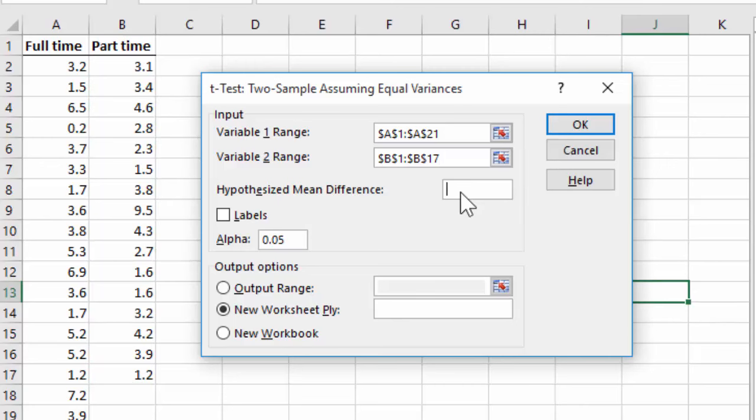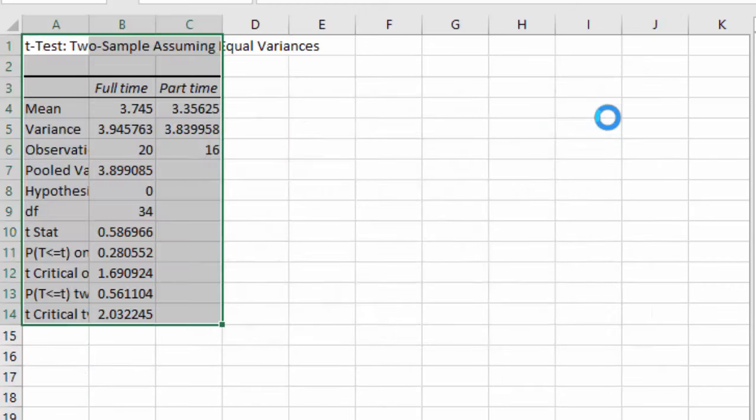For hypothesized mean difference, I'm going to input 0, or just leave it blank. Note that if we're testing whether the difference is more than 5, for example, we just enter 5 here. I'm going to check labels because I selected the labels, and then click OK.